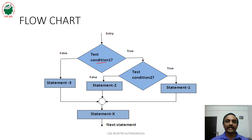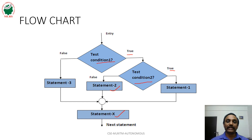The flowchart for nested if-else statement: first, test condition 1 is verified. If that is true, then test condition 2 is verified. If that is also true, statement 1 is executed, then control goes to statement x. If test condition 2 is false, then control goes to statement x. If test condition 1 itself fails, then statement 3 is executed, then control comes to statement x.